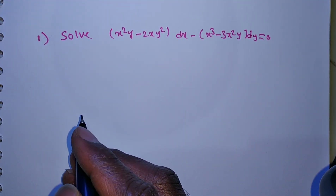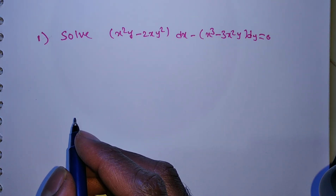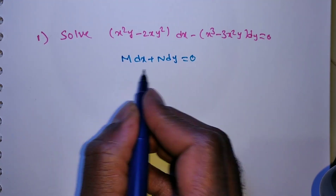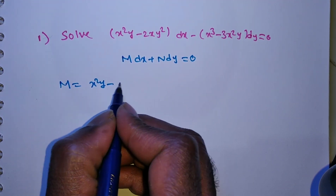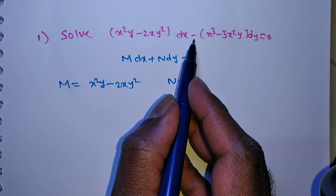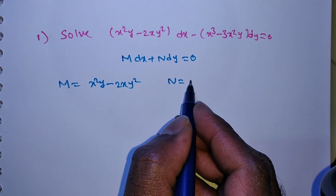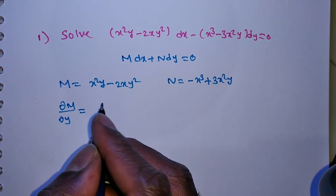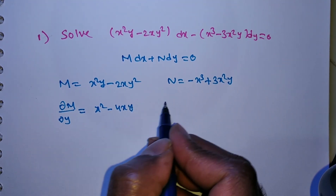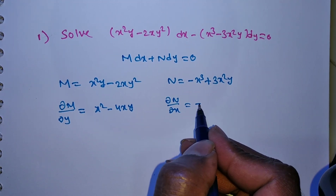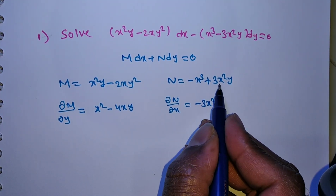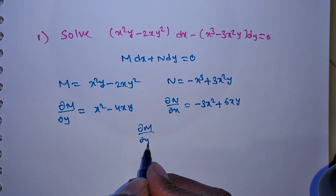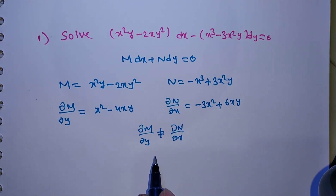Step by step: the equation is in the form M dx + N dy = 0. Here M = x²y − 2xy² and N = −x³ + 3x²y. Check exactness: ∂M/∂y = x² − 4xy; ∂N/∂x = −3x² + 6xy. Since ∂M/∂y ≠ ∂N/∂x, the equation is non-exact.